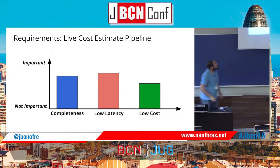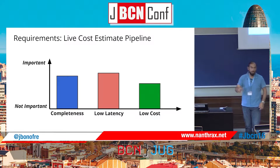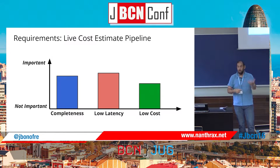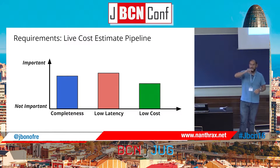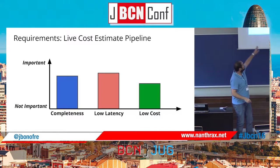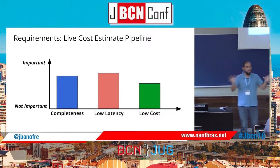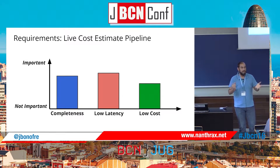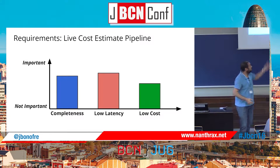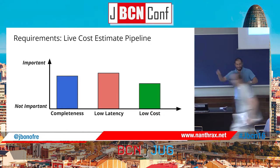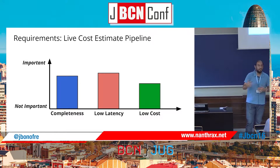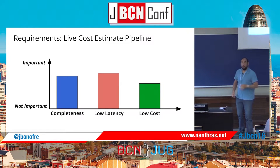Another use case is a billing estimation pipeline. Here we talk about the user — your user pays to use your application, and you want to give them an estimate of their future bill. For example, if you use Amazon AWS, you can see an estimation of your monthly cost. Completeness is less important here because we'll have a sampling of the data and prediction for the end of the month. Low latency is really important — your user can't wait hours for just an estimation of the cost; they want it now. Low cost is also very important because you don't want to impact your system just to estimate the cost.